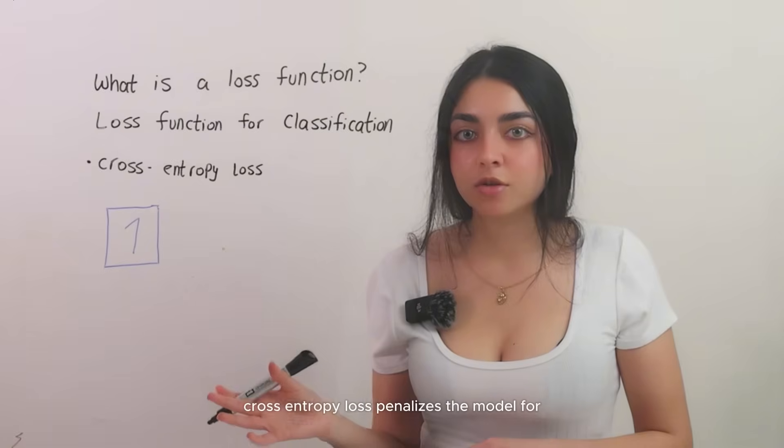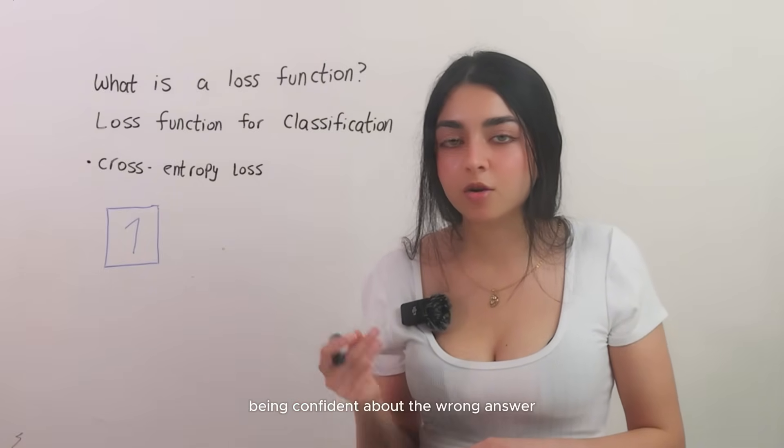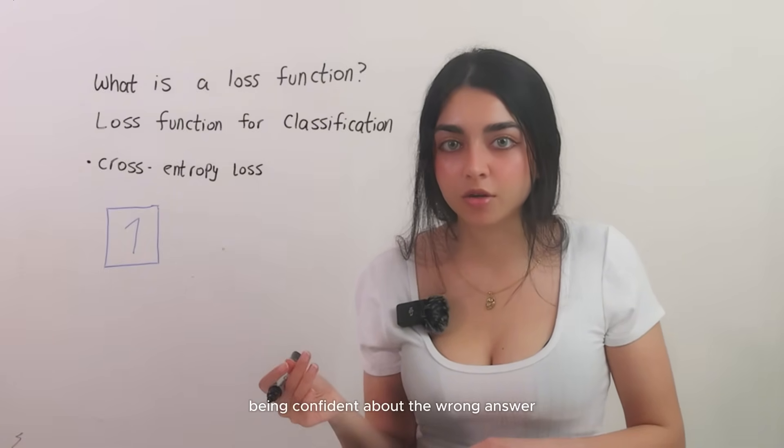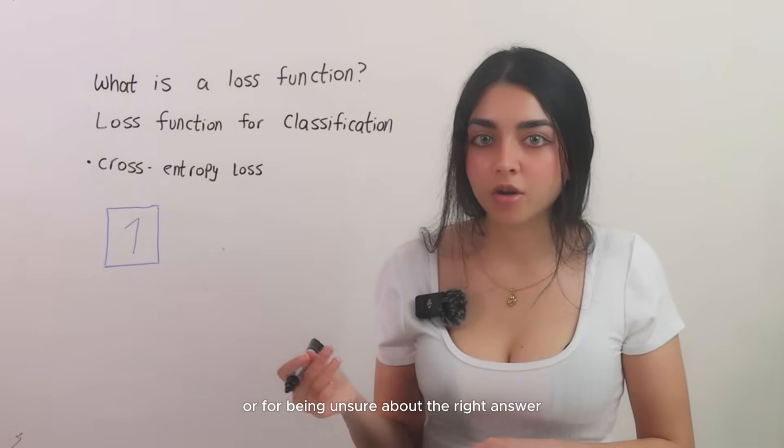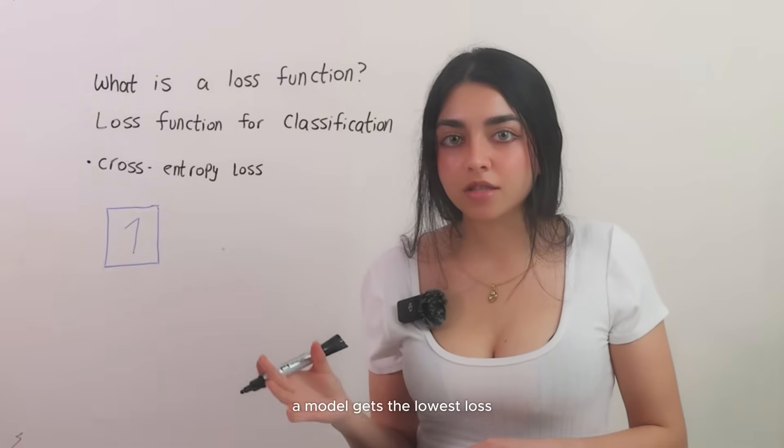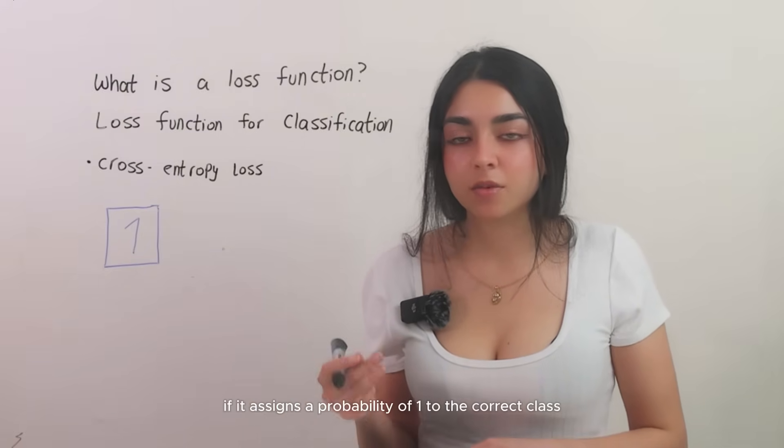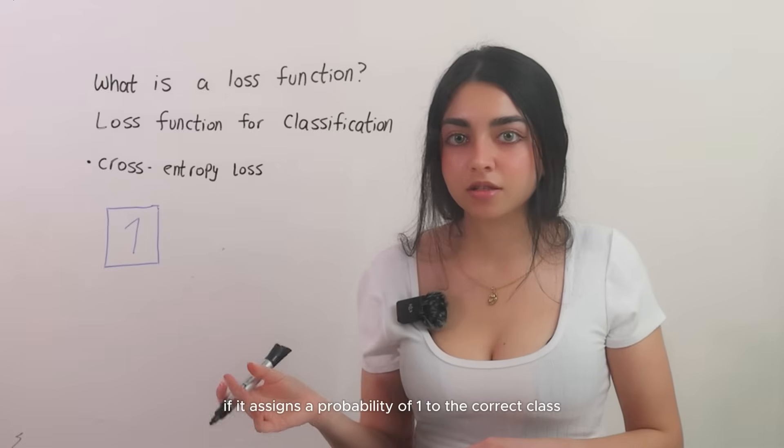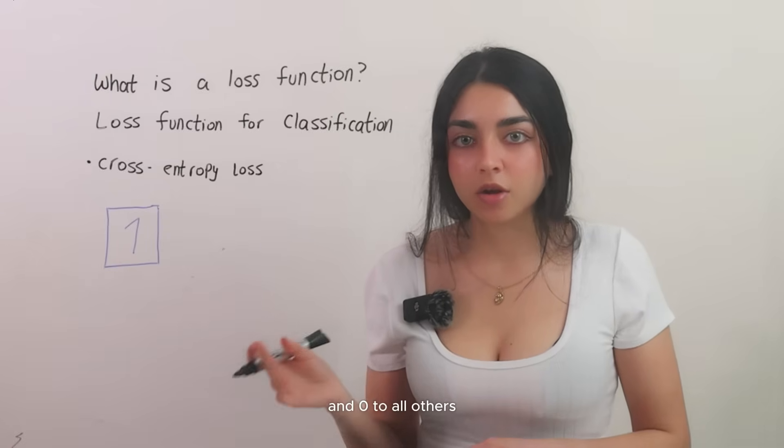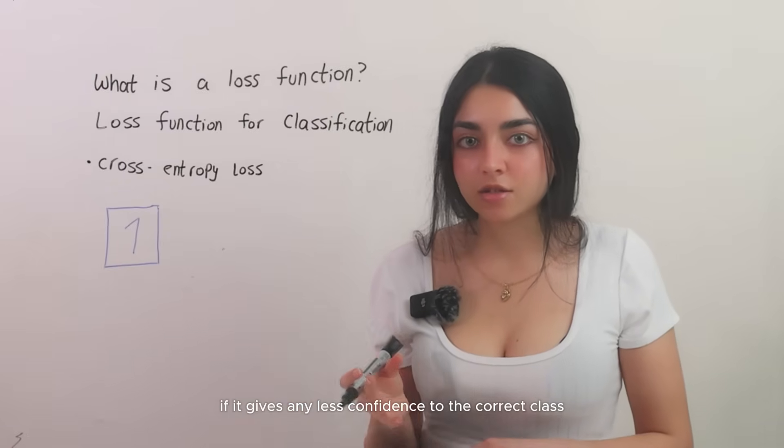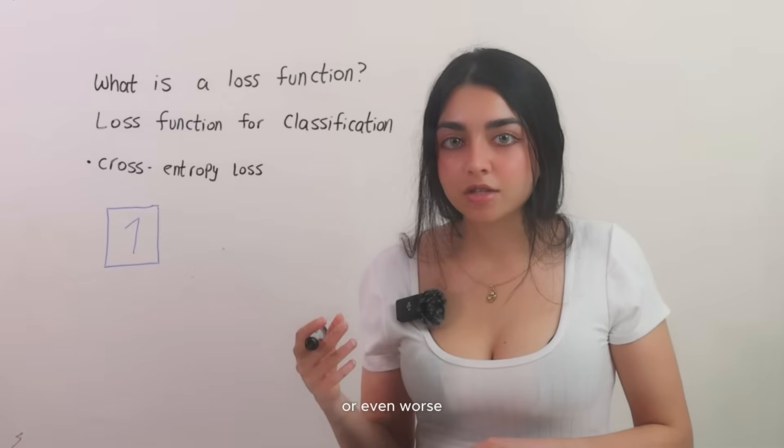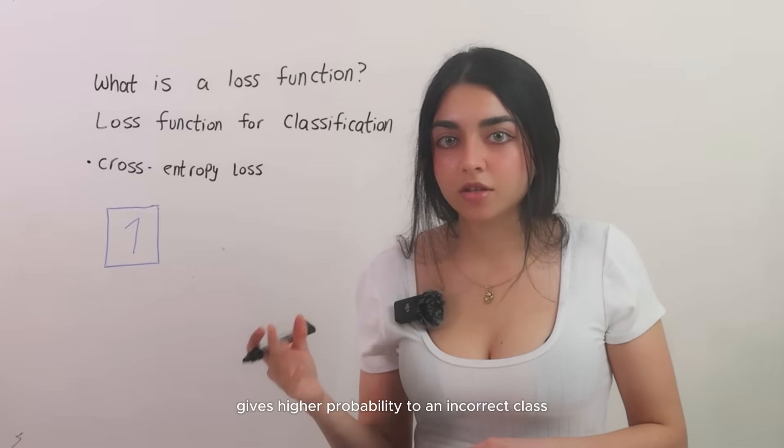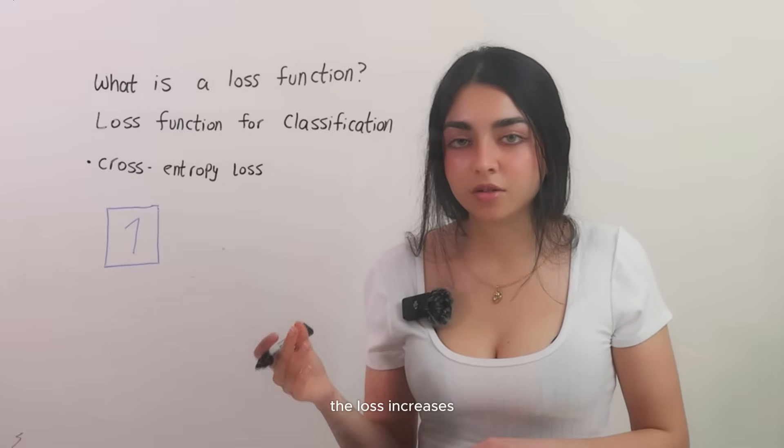In plain terms, cross-entropy loss penalizes the model for being confident about the wrong answer or for being unsure about the right answer. A model gets the lowest loss if it assigns a probability of 1 to the correct class and 0 to all others. If it gives any less confidence to the correct class or even worse gives higher probability to an incorrect class, the loss increases.